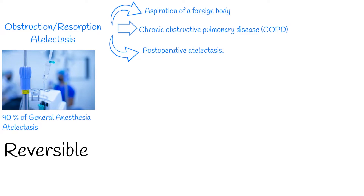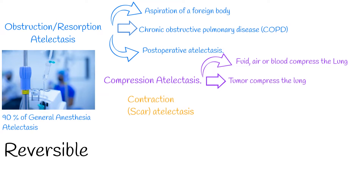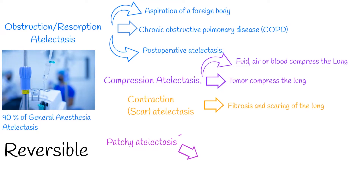Another form of atelectasis is compression atelectasis. When fluid, air, blood, or tumor in the pleural space can compress the lung. Contraction atelectasis, or scar atelectasis, is due to fibrosis and scarring of the lung.